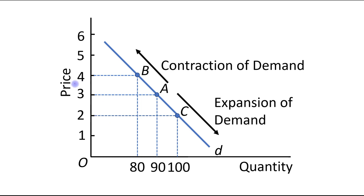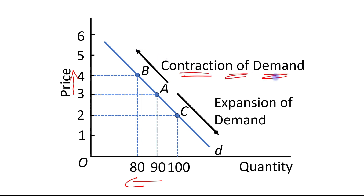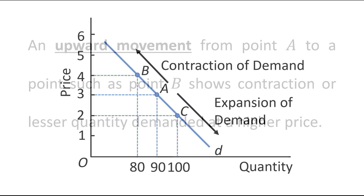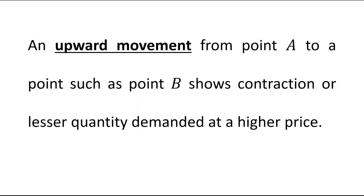When price increases from Rs. 3 to Rs. 4, quantity demanded falls from 90 units to 80 units, and the movement from point A to point B represents an upward movement. This is known as contraction of demand. An upward movement from point A to a point such as point B shows contraction — lesser quantity demanded at a higher price.